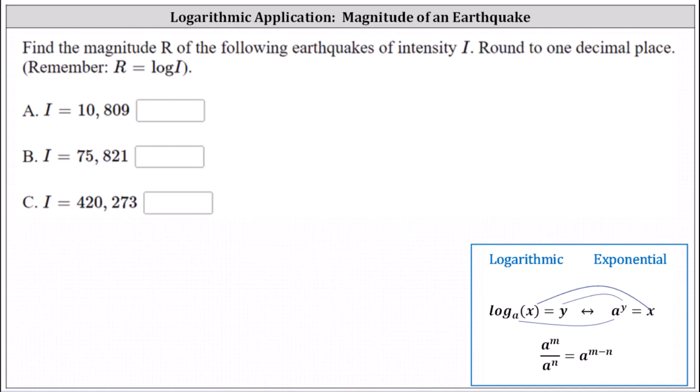For A, B, and C, we are given I. For A, the magnitude R is equal to the common log of 10,809. For B, the magnitude R is equal to the common log of 75,821. And for C, the magnitude R is equal to the common log of 420,273.